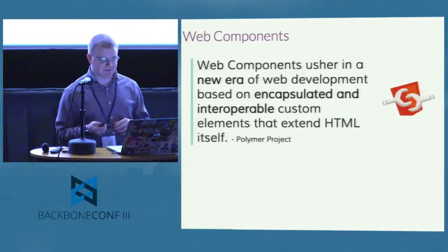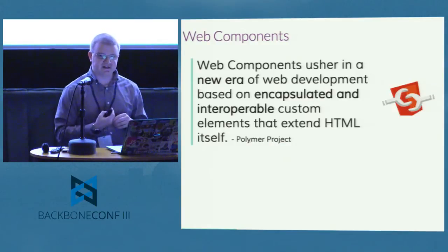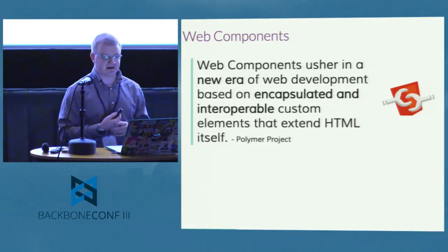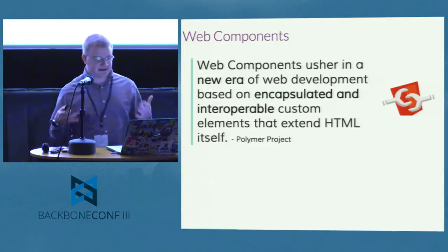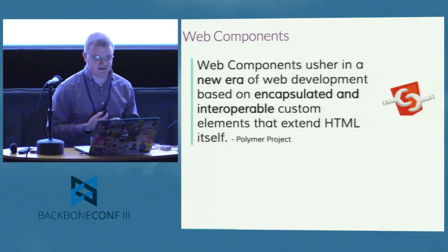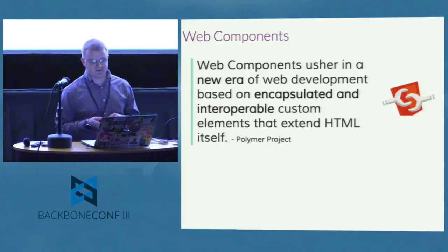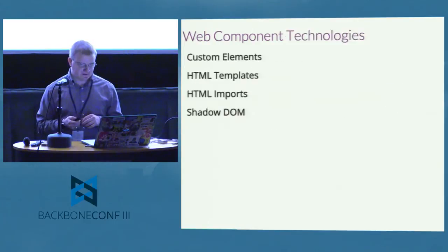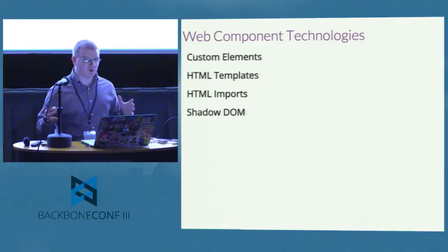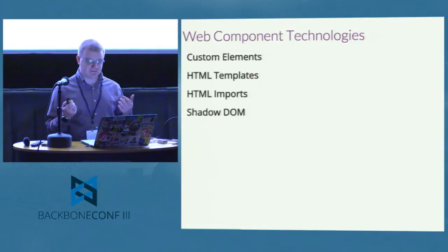Web components are a new HTML5 technology that allow us to create truly encapsulated and interchangeable components that extend HTML itself, extending the functionality of the DOM. This power is now given to us as developers — that's a quote by the Polymer Project and I think it's a really accurate description of the impact of web components. Web components aren't one big thing — like HTML5, it's a collection of a whole bunch of different technologies. There are four main APIs that make up web components.